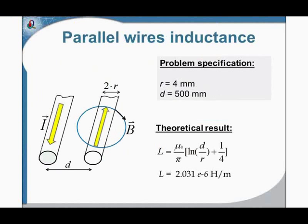The next example is the simple transmission line consisting of two conductors — a direct conductor and a back conductor. The length of the line is supposed to be infinite, meaning we ignore the side effects that occur at the beginning and end of the transmission line. Again, this case has a simple analytical solution — you can see the equation on the screen. This formula gives accurate results if the wire is thin compared to the distance between wires. Let's simulate this case in QuickField.